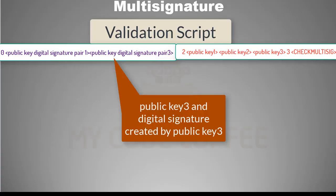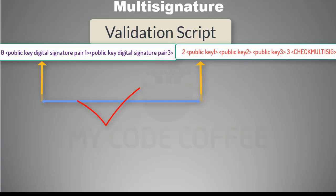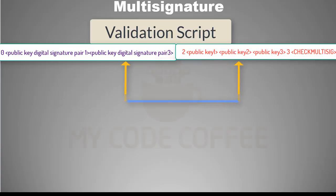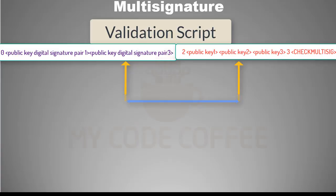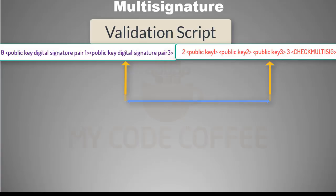In our example, let us say we have all valid signatures — pair one is for public key one, and pair three is for public key three. The first validation succeeds, so the signature counter and public key counter both increment to one. For the next signature, which is for public key three, validation against public key two will fail — only the public key counter increments. Then validation against public key three succeeds, and the operation pushes true onto the stack. This is how CHECK_MULTISIG validates multiple signatures.